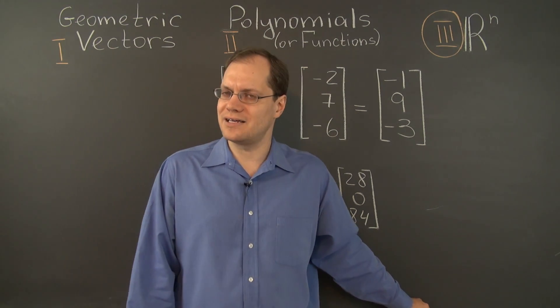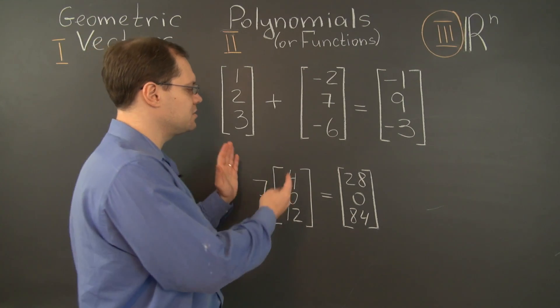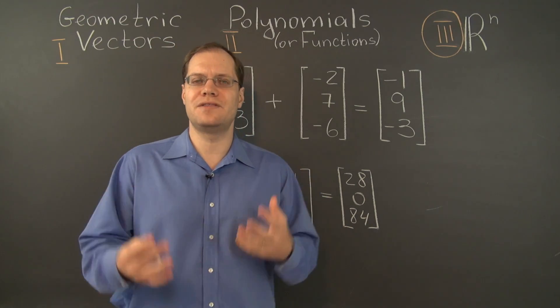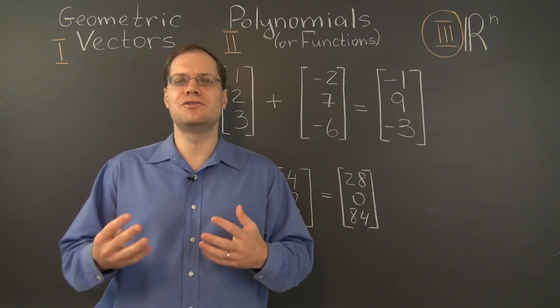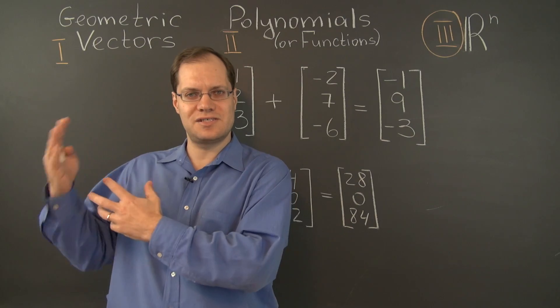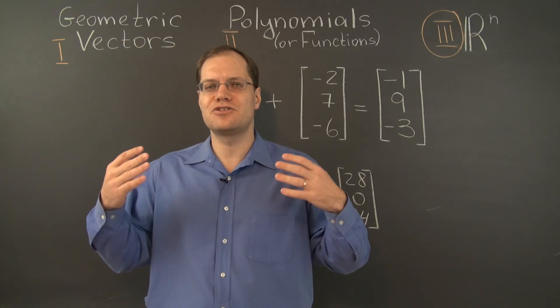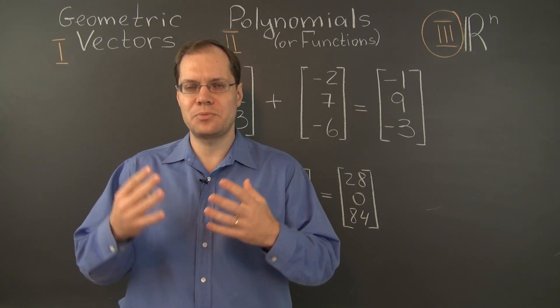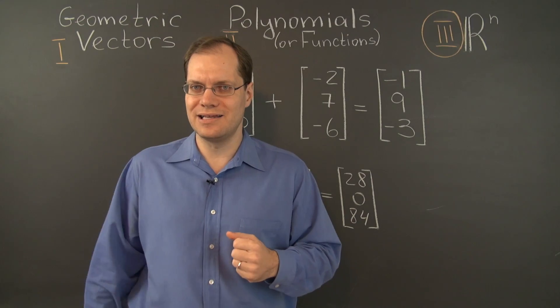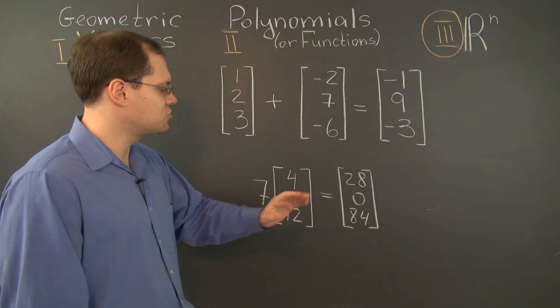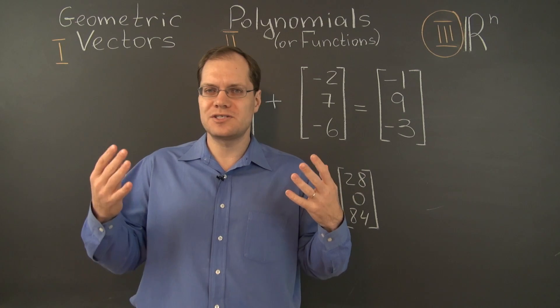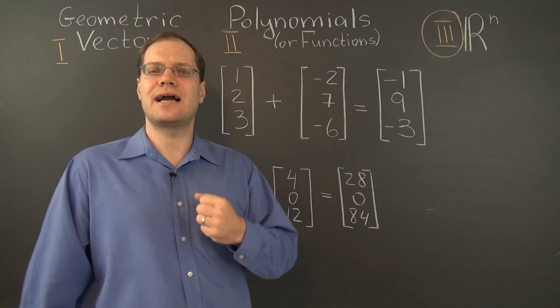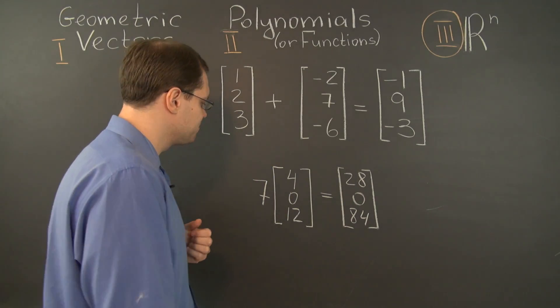Even though there is absolutely nothing geometric about this space. These are triplets of numbers. If you have some association between geometric vectors in space and triplets of numbers, I invite you to break that association. If you do, you will think of triplets of numbers as one of the most abstract things you can imagine.